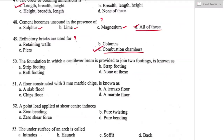Question number fifty: the foundation in which a cantilever beam is provided to join two footings is known as strap footing. Option B is the right answer. This type of footing is adopted when a column is very close to the property boundary line and there is no provision to project the footing beyond the column face — a cantilever strap beam is provided.